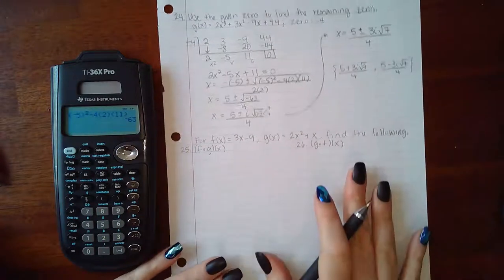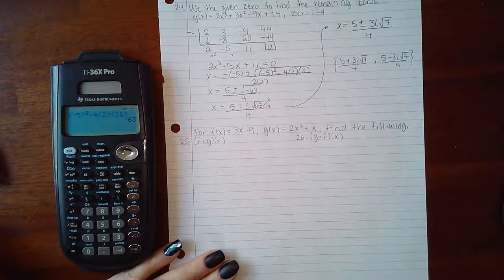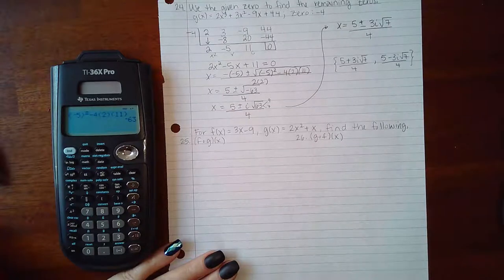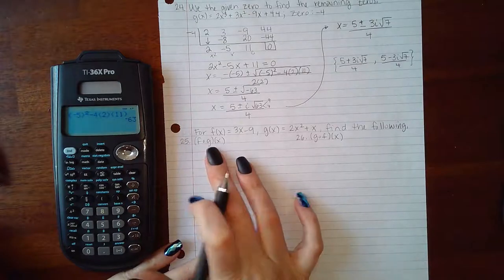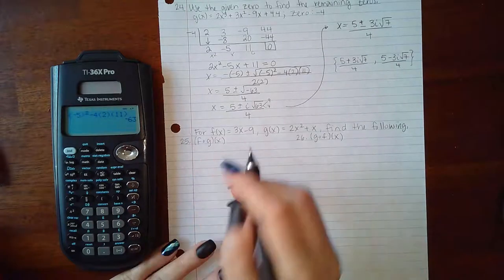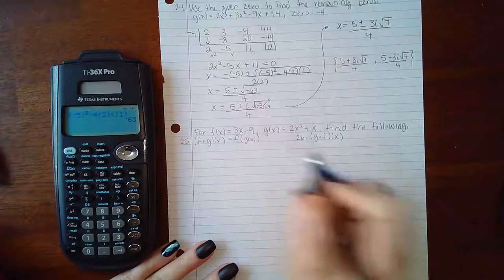Now for numbers 25 and 26, it says for the function f of x equals 3x minus 9 and g of x equals 2x squared plus x, find the following: f of g and g of f. So f of g means I'm going to have the f function on the outside and the g function on the inside.